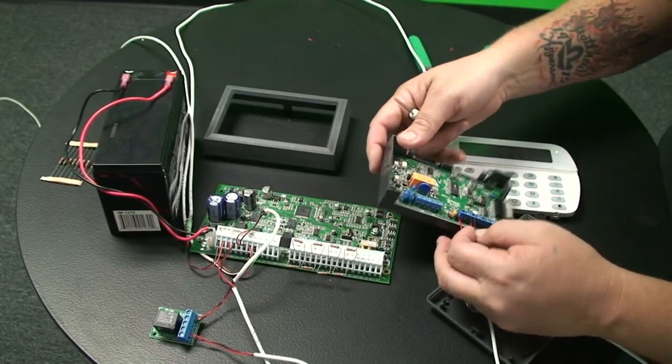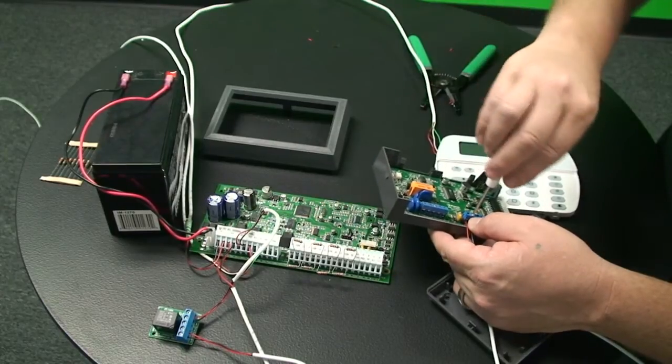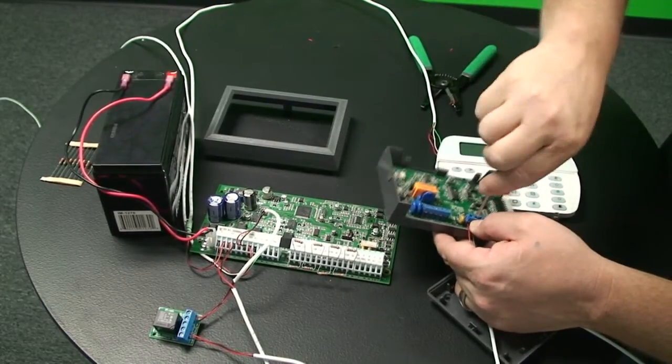And then our black wire for our minus, which we also used on auxiliary negative on the main panel. We'll tighten this up.